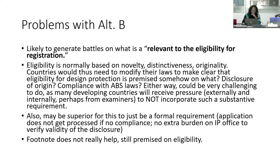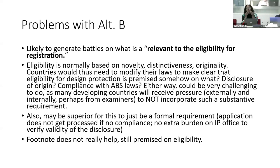Some problems with Alternative B: it's likely to generate battles on what is relevant to the eligibility for registration. Eligibility sounds like it's going to substance. We normally think about eligibility for designs — and again, it varies by country — but novelty, distinctiveness, ornamentality, those are the requirements for eligibility. If you link this to having to be a requirement for eligibility, then you've got to explain how it relates to eligibility, and what is it that actually has to be shown. You're now having to make it a substantive requirement.